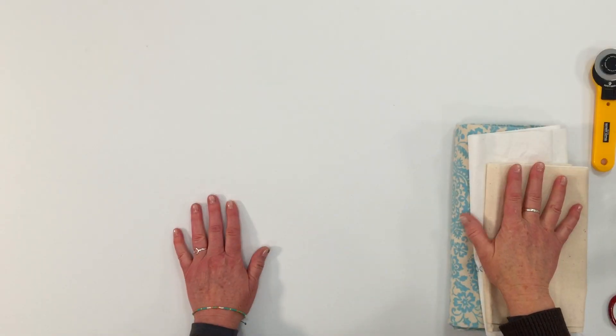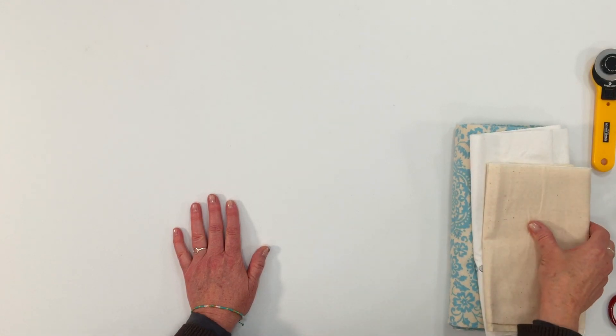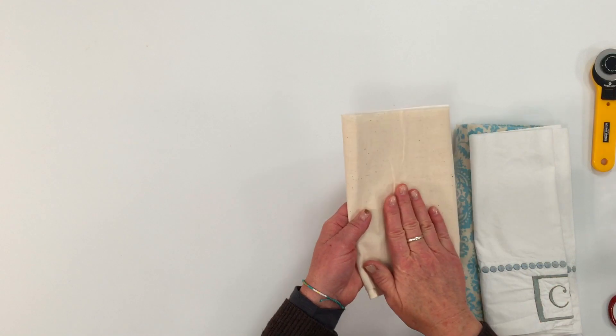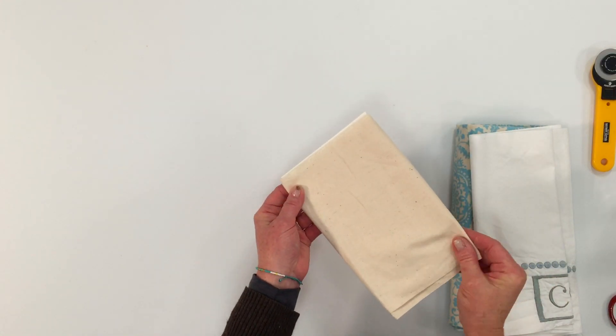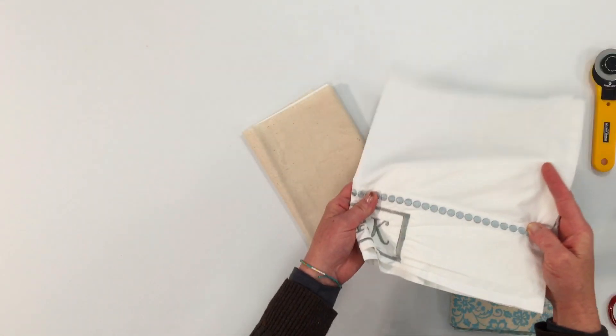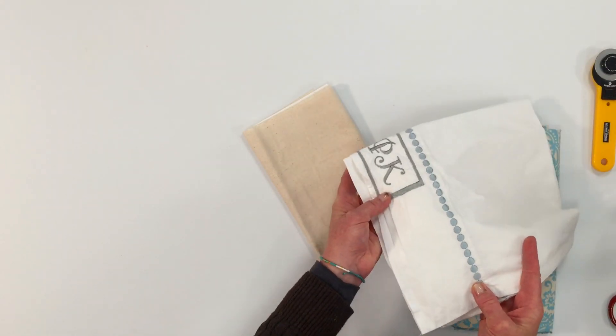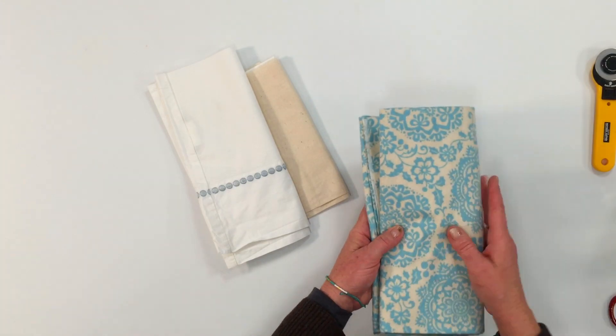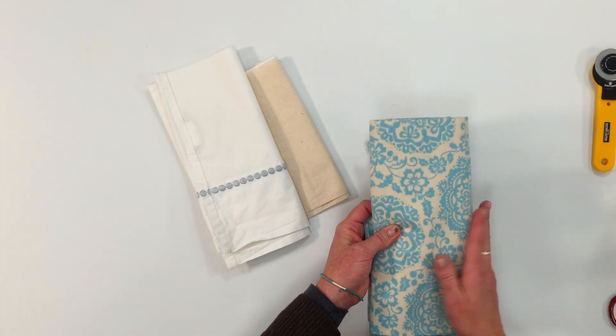So this eye pillow really doesn't call for a lot of materials and supplies. You will need for the inner cover, the inner bag, just a piece of muslin or I am using a recycled pillowcase for the inner lining, and for the outer lining you want to use something that's soft.